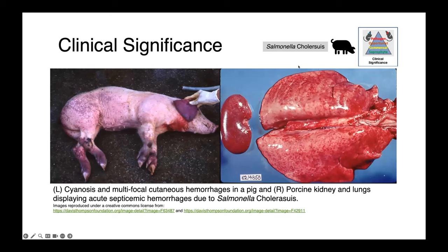In these images, you can see an animal who is clearly septic. This pig is cyanotic with multifocal cutaneous hemorrhages along the backside and dark blue to purple feet and ears. On the right, we have the kidney and lungs displaying these acute septicemic hemorrhages. The lungs are very reddened and clearly have hemorrhagic lesions diffusely spread over the serosal surface.